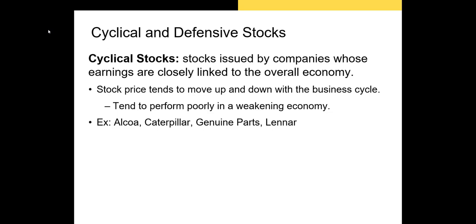Next, we have cyclical stocks. These stocks are issued by firms whose earnings are heavily dependent on the state of the economy. When economic conditions are good and the economy is in an expansionary period of the business cycle, cyclical stocks offer high returns. However, during contractionary periods in the business cycle, these stocks offer very low returns.